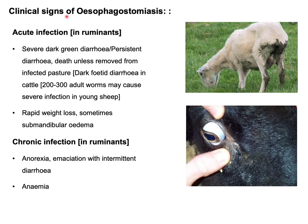Clinical signs of esophagostomiasis in sheep, goat, and cattle: in acute conditions there is severe dark green or persistent diarrhea, and death may occur unless animals are removed from the infected pasture. In cattle, dark fetid diarrhea is observed. According to the literature, 200 to 300 adult worms may cause severe infection in young sheep. Other acute signs include rapid weight loss and sometimes submandibular edema. In chronic infection, clinical signs include anorexia, emaciation, intermittent diarrhea, and anemia.